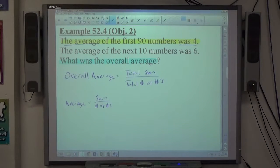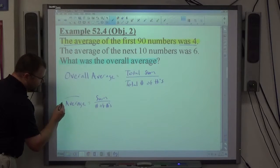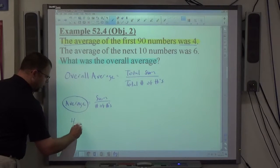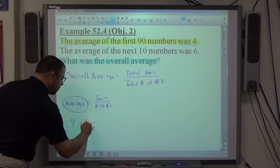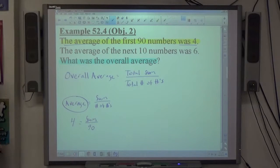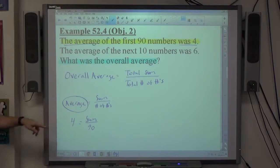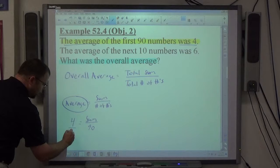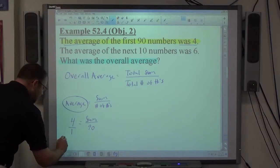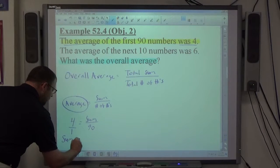So that highlighted yellow statement there, the average of the first 90 numbers was 4. They're telling me the average is 4. They're telling me there were 90 numbers. They're not telling me what the sum of the numbers is. So looking at the yellow highlighted statement, it gives me this information. If I cross multiply, putting this 4 over 1, I get the sum of those 90 numbers was 360.